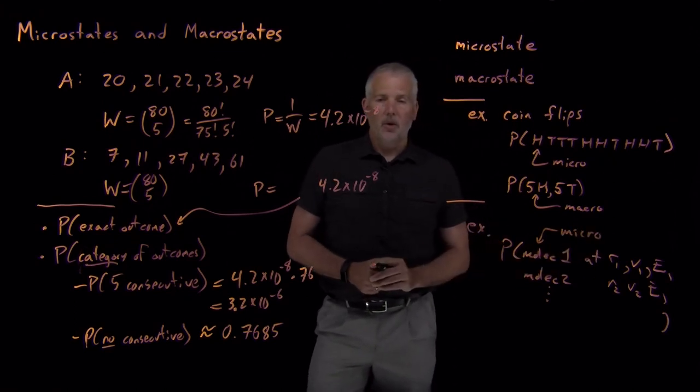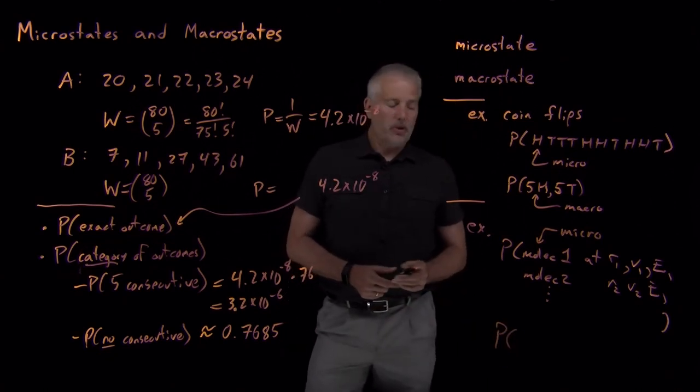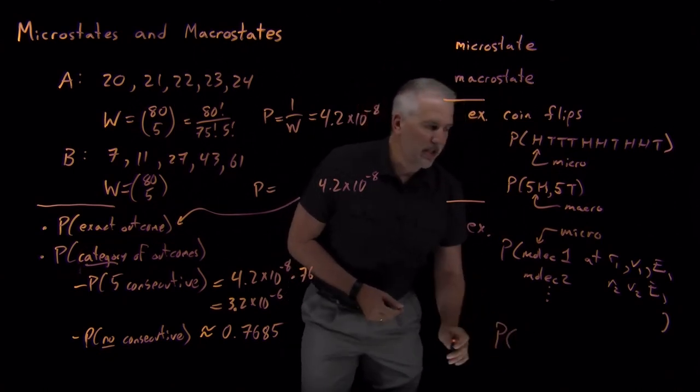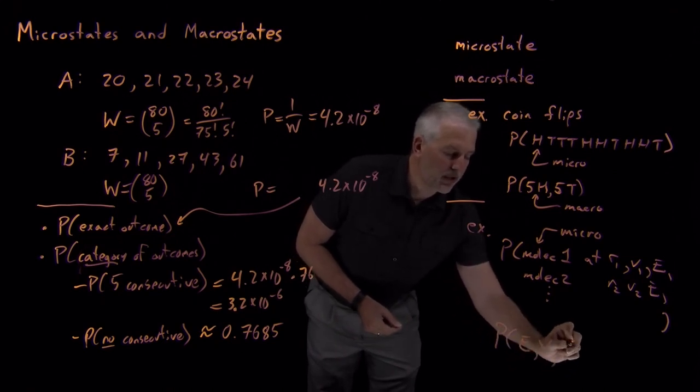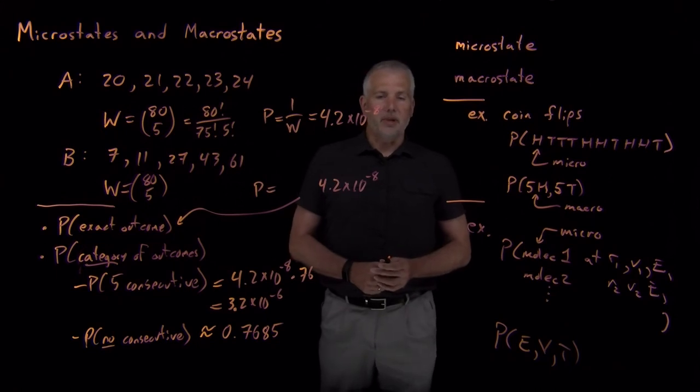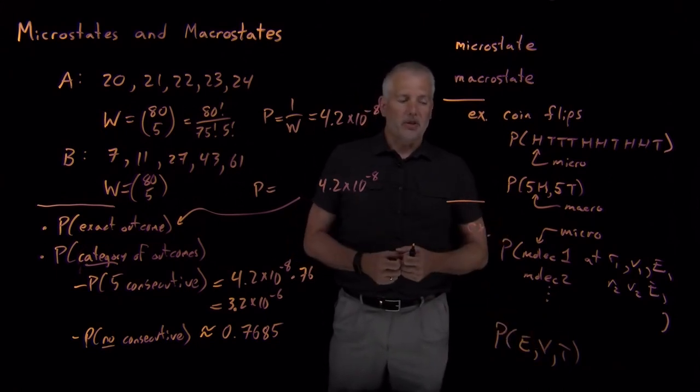What I mean when I talk about a macrostate is something more like we typically think of in chemistry problems. If I say what is the probability that the whole system has some total energy and some total volume and some total temperature, some total collection of properties.